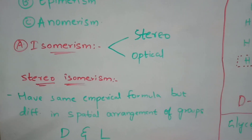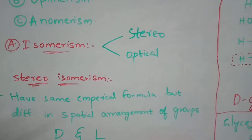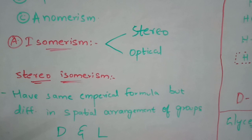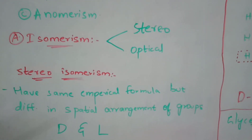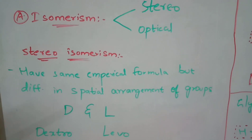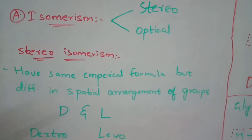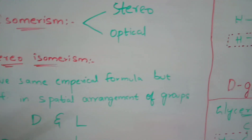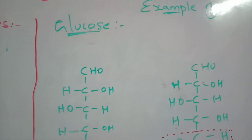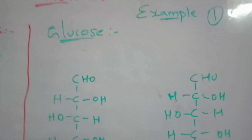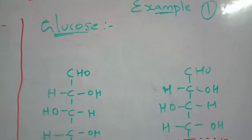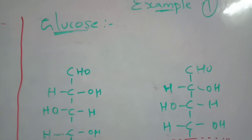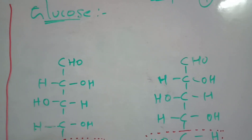In stereoisomerism, if you take an aldehyde or keto group, there will be a change in the position of the group, but the empirical formula remains the same. This is denoted as D and L — D stands for dextro and L stands for levo. The best examples of stereoisomerism are glucose and glyceraldehyde.